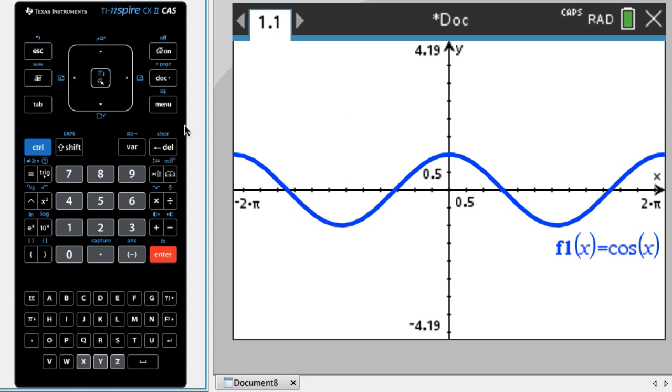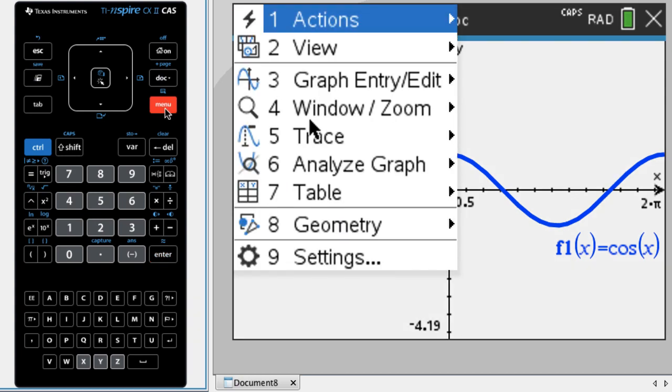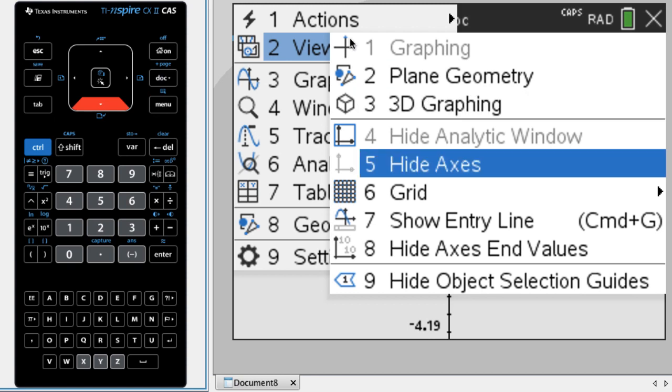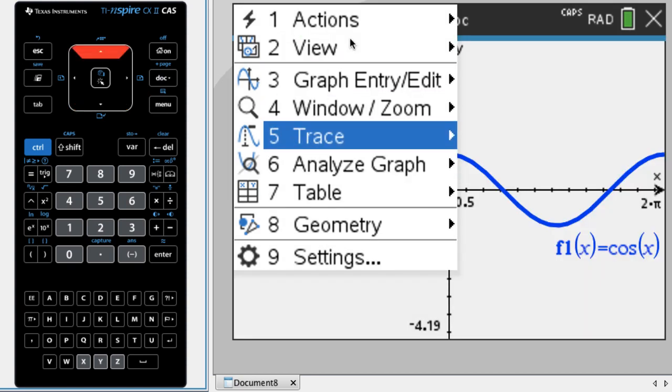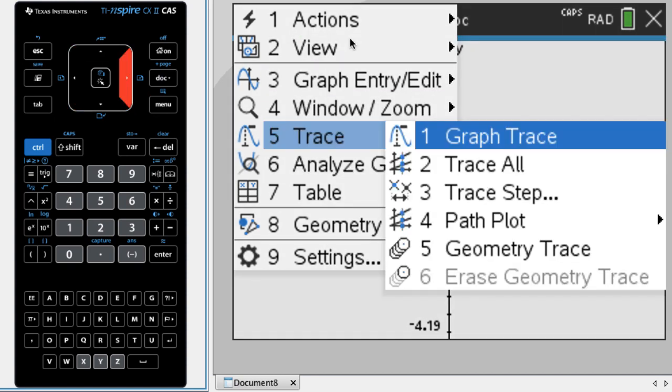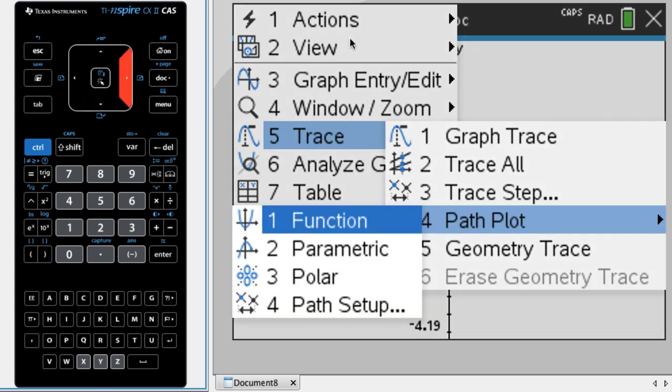Okay, so what I'm going to do now is press menu and then option five is trace. Whoa, option five, press five. So I get trace and then option four here is path plot. And so I'm dealing with a function, so I'm going to choose function. This is actually kind of weird. I only have a function, but it lets me choose parametric and polar anyway. I don't really know why. I'm going to press enter.